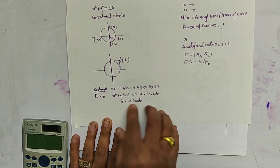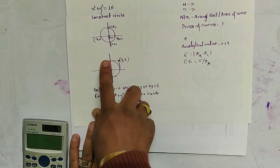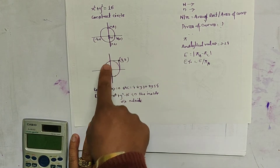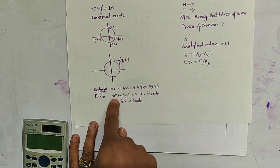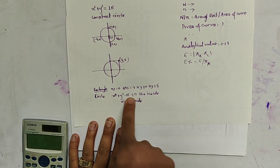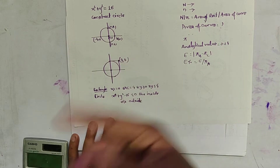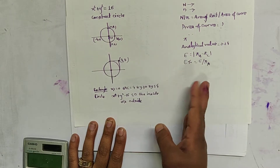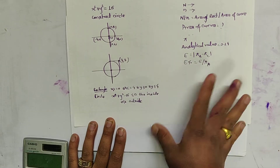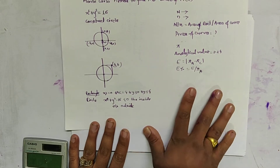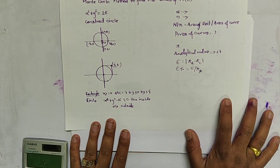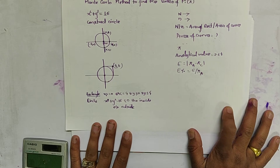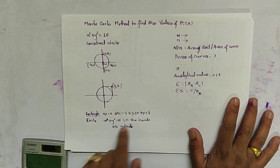Similarly for the circle, its boundary condition becomes x² + y² − 16 ≤ 0. If it is greater than 0, then it lies outside the circle. We generate random numbers and calculate whether each point lies inside or outside the circle.